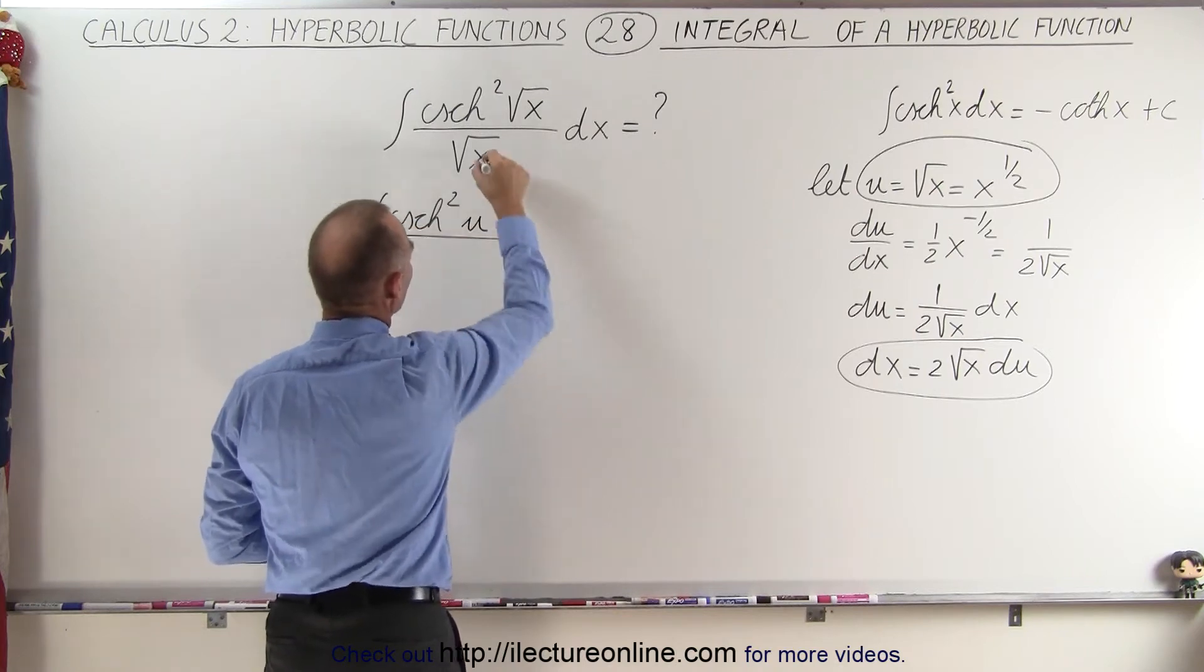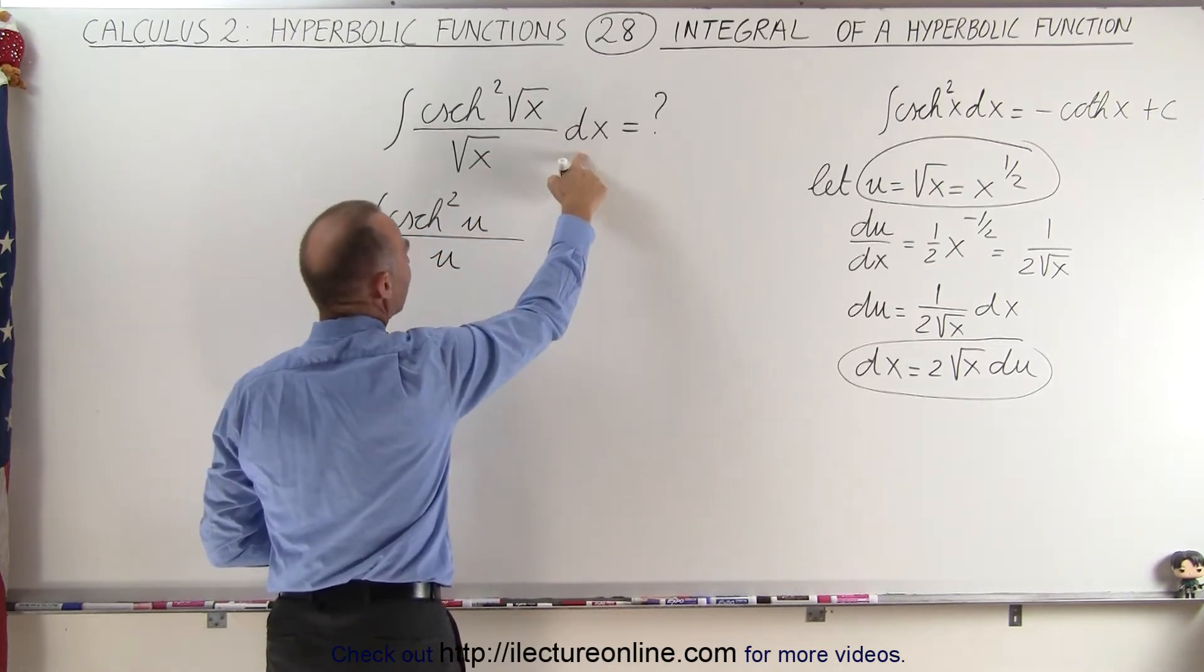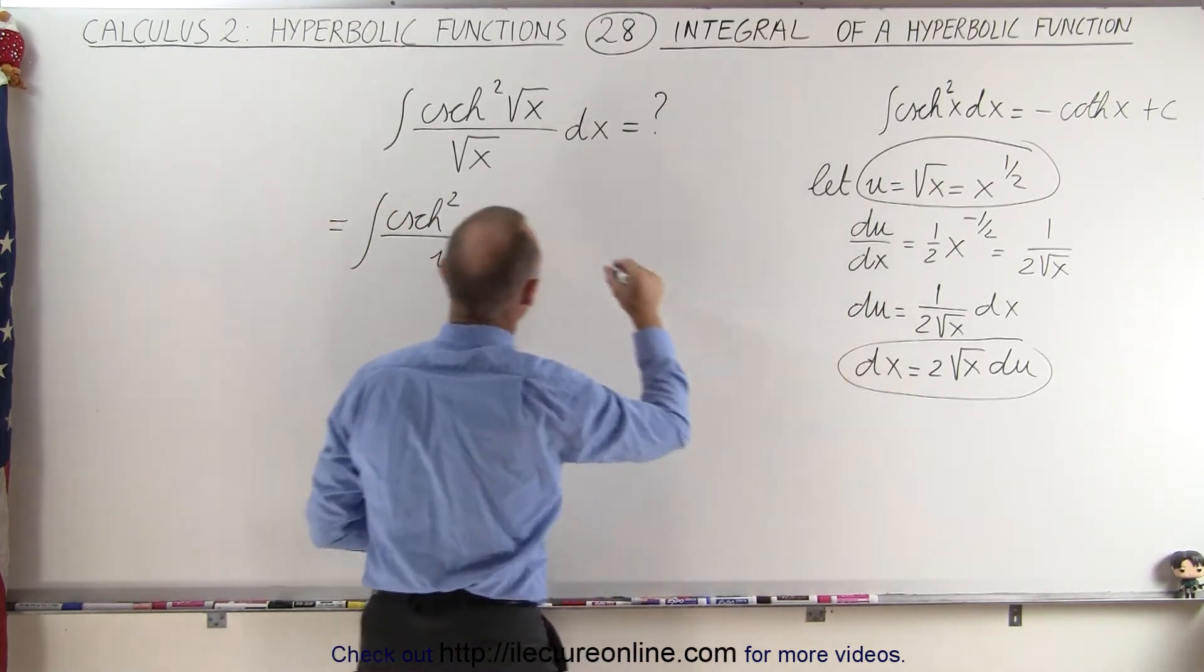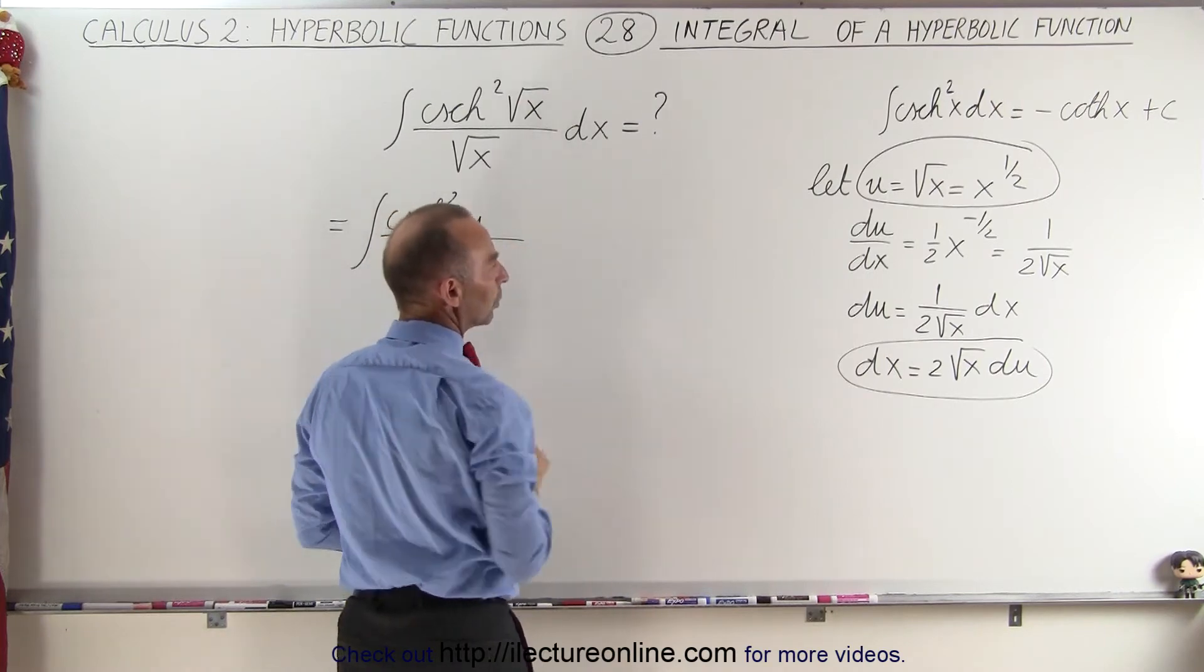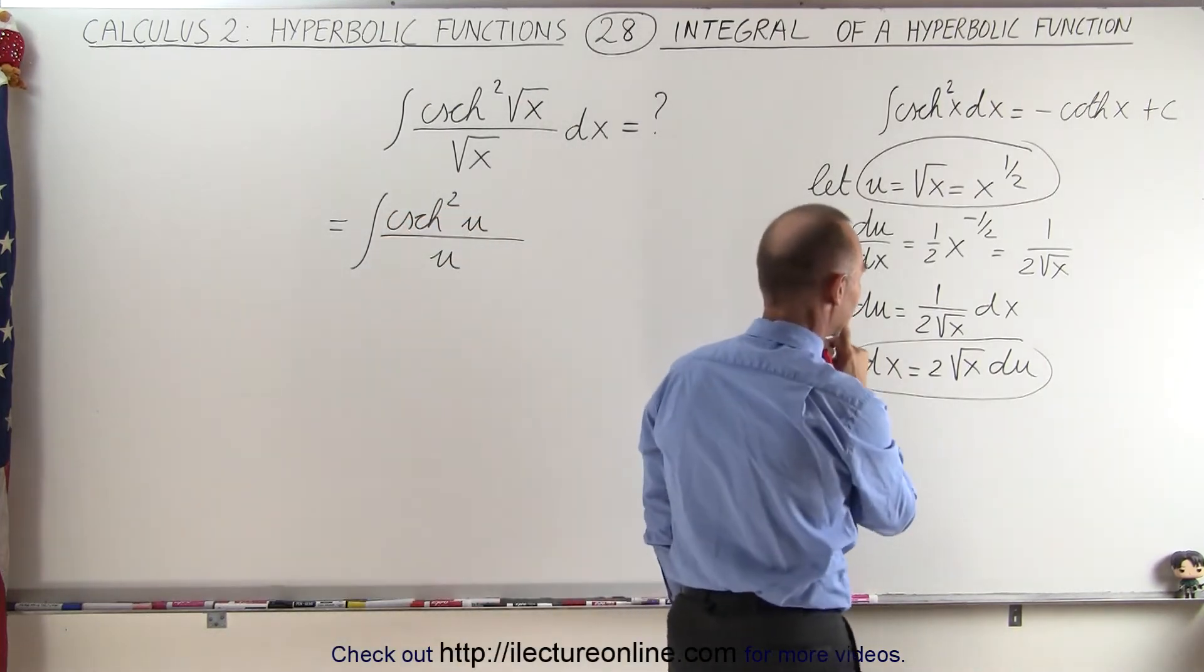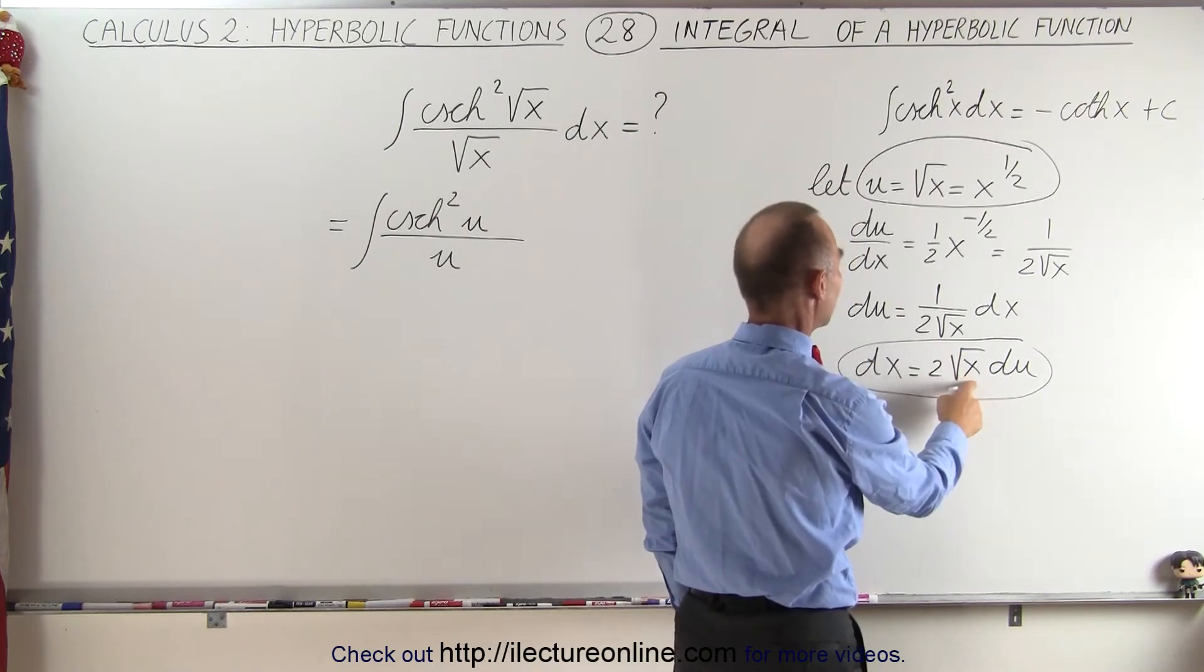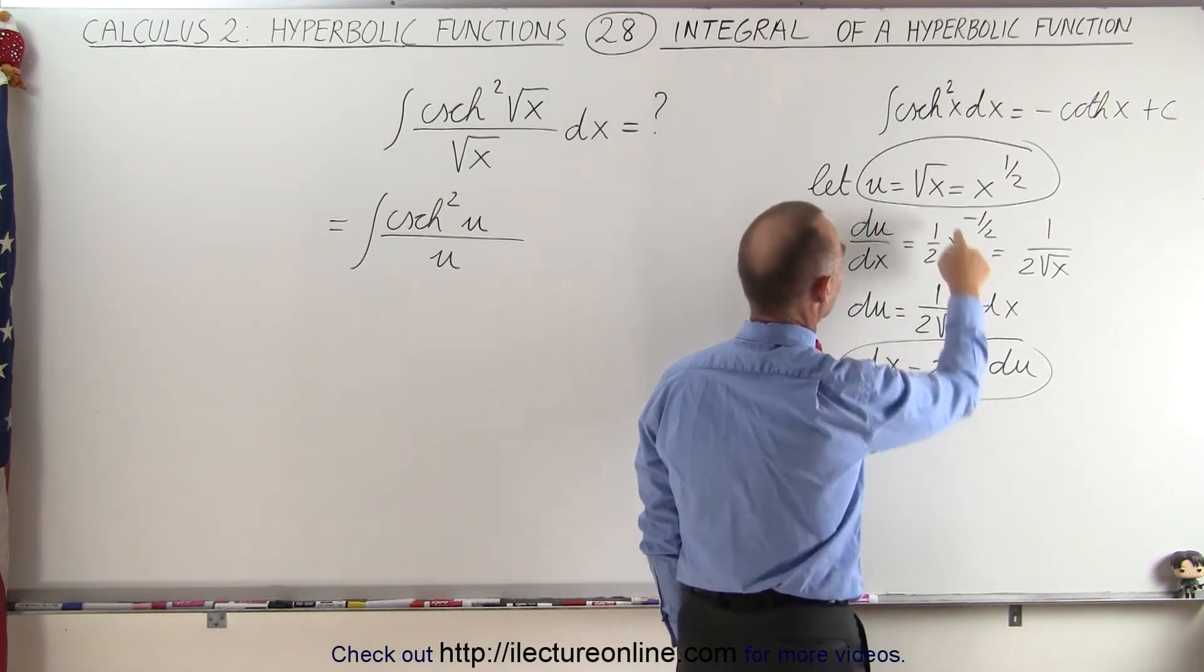And in the denominator we're going to have a u here and dx now will be replaced by 2 times... oh let's see here, I don't think I want to do that because it's essentially correct, but remember that the square root of x is equal to u.